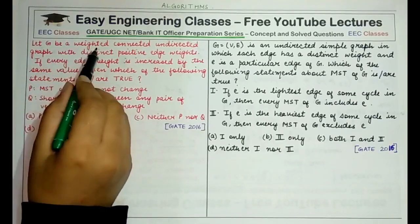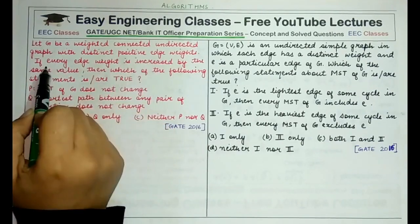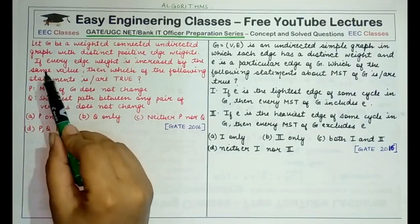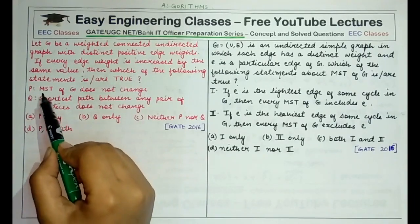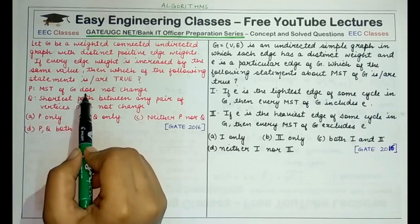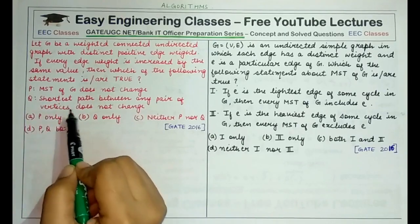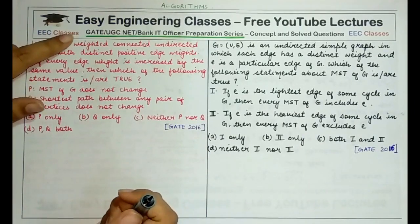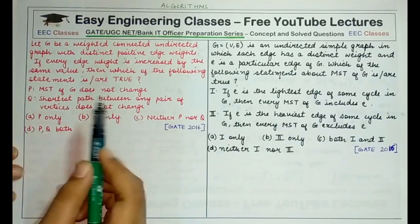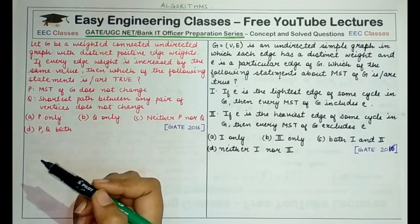The question says: let G be a weighted connected undirected graph with distinct positive edge weights. If every edge weight is increased by the same value, which of the following statements is or are true? Statement P says the MST of G does not change, and statement Q says the shortest path between any pair of vertices does not change.